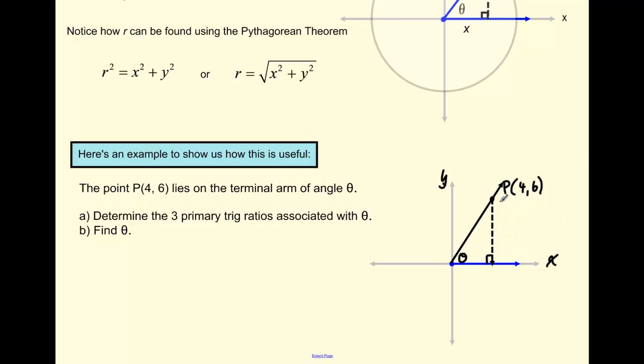Where our theta is in standard position in between the initial arm and the terminal arm. Now, what are some lengths that we can find on this triangle? Well, I know the X value is 4. So the base of this triangle is going to be 4 units long. I know the height is Y or Y units up. So I know that's going to be 6 units. The only thing I don't know is this value of the hypotenuse. So we can call that R for right now. So in order for us to figure out the three primary trig ratios, a couple of those ratios use the length of the hypotenuse. So we can solve for R. And to do that, we're going to use the Pythagorean theorem.